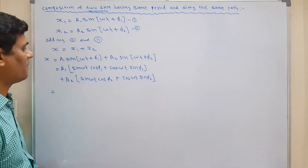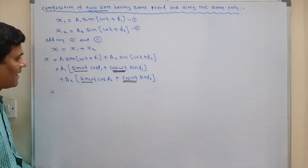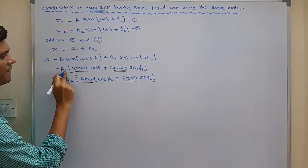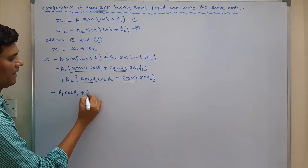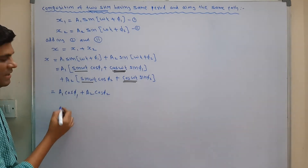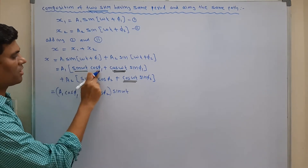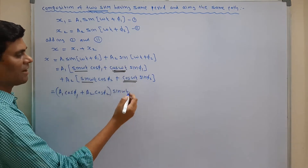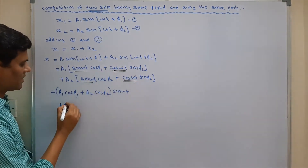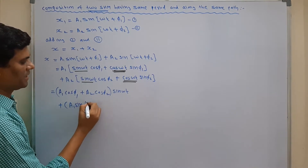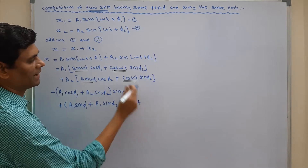Taking common terms: sine omega t is common between two terms, and cos omega t is common between the other two. So we group as: (A1 cos phi 1 plus A2 cos phi 2) sine omega t, plus (A1 sin phi 1 plus A2 sin phi 2) cos omega t.